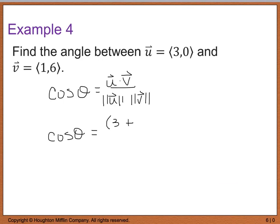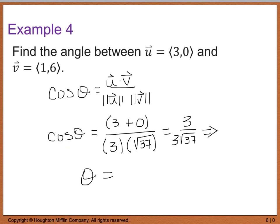The numerator is 3, divided by the magnitude of u. And the magnitude of u is going to be the square root of 3 squared plus 0, which is going to be 3, times the square root of 1 squared plus 6 squared, or the square root of 37. So when we simplify this, we end up with 3 divided by 3 times the square root of 37. And if you take the inverse cosine of that, this tells us that theta is equal to 80.5 degrees.